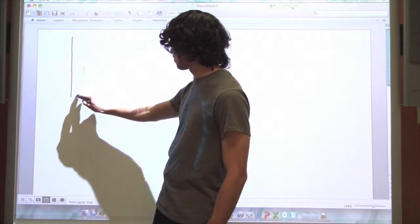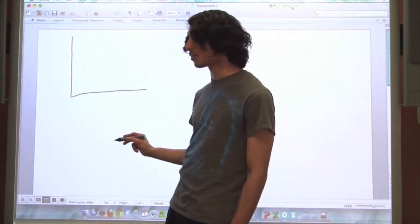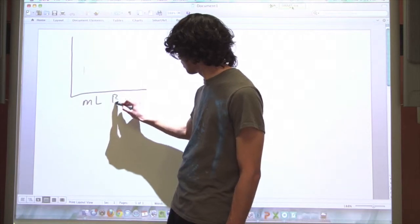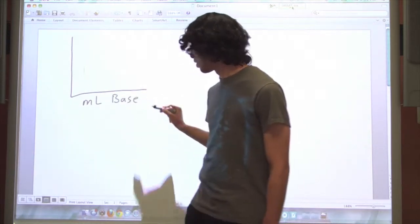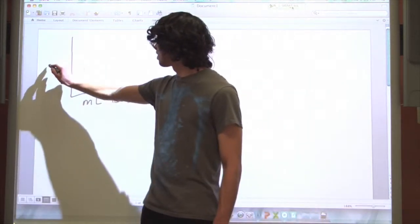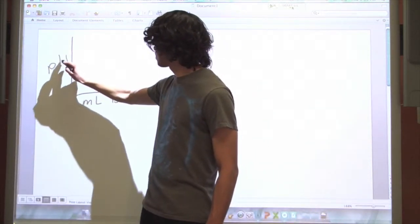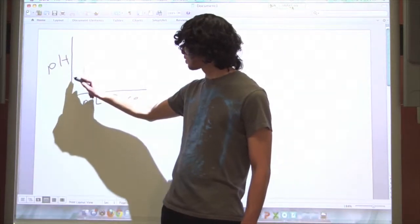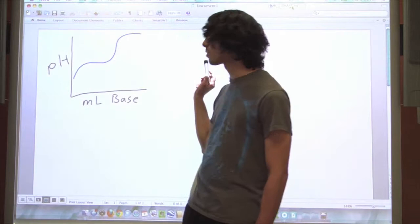In order to consider the theory, we should first draw a titration curve. On the horizontal axis we'll consider the volume of base added, and on the vertical axis we'll look at the pH. If you were to do this titration you'd end up with a curve that looks something like this.